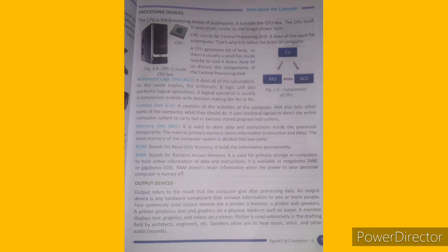The main memory of the computer system is divided into two parts: ROM and RAM. ROM stands for Read-Only Memory — it stores information permanently. RAM is the primary storage of the computer that holds active information, data, and instructions. It is available in megabytes (MB) and gigabytes (GB). RAM does not retain information when the power to the computer is turned off.